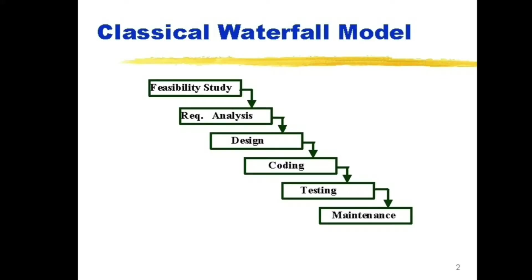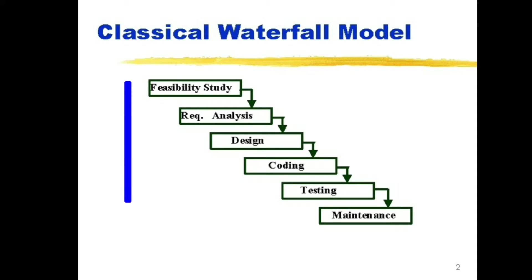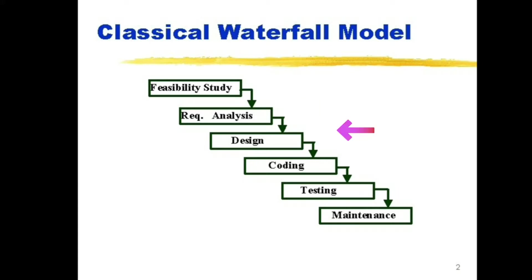Here you can see the different sequential phases of the classical waterfall model: feasibility study, requirement analysis, designing, coding, testing, and maintenance. Now let's learn about each of these phases in detail.